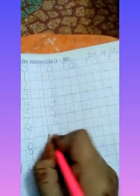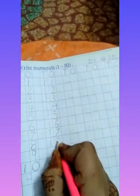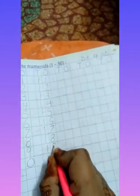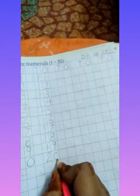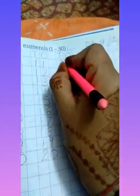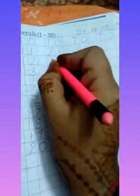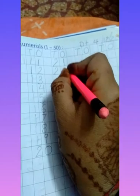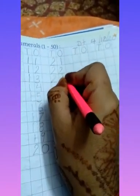One-seven is seventeen, one-eight is eighteen, one-nine is nineteen. Two-zero is twenty. After twenty comes twenty-one: two-one is twenty-one, two-two is twenty-two, two-three is twenty-three.